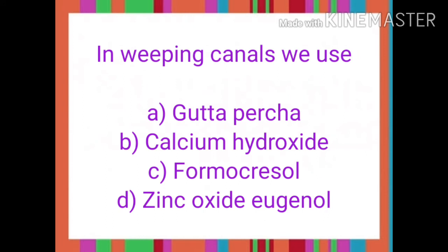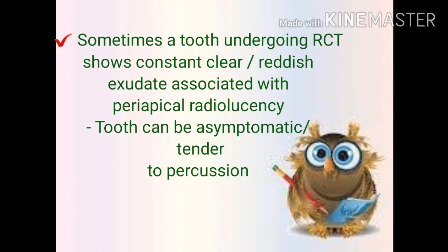Moving on to the next slide: 'In weeping canals, we use?' The options are: A) Gutta-percha, B) Calcium hydroxide, C) Formocresol, or D) Zinc oxide eugenol. The answer is option B — calcium hydroxide. Here is the explanation for this question.